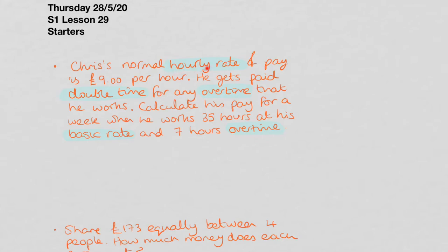Chris's normal hourly rate of pay is £9 per hour. So this is his normal hourly rate. If Chris works a normal hour, he gets paid £9.